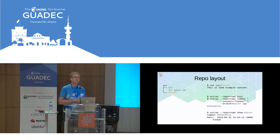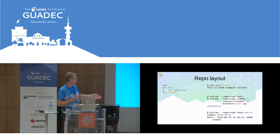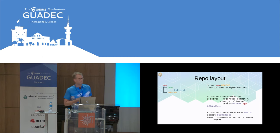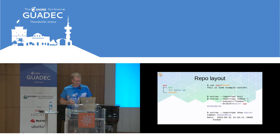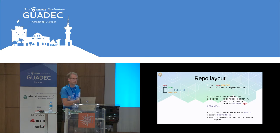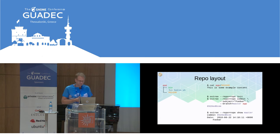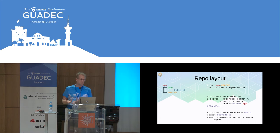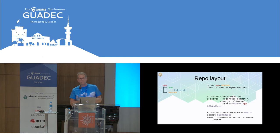Let's call it master so people recognize it. The 'app' here is the directory, and it prints this weird string of numbers which is the object ID for the commit. All the numbers I'm showing here are shortened — in reality they'll be like 64 characters or something. Now we have this directory committed into the repository and we can use the 'ostree show' command to show us the commit.